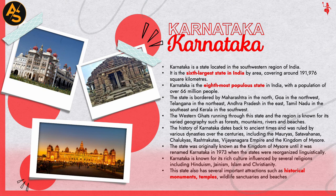Introduction of Karnataka. Karnataka is a state located in the southwestern region of India. It is the sixth largest state in India by area, covering around 191,976 square kilometers. Karnataka is the eighth most populous state in India, with a population of over 66 million people.